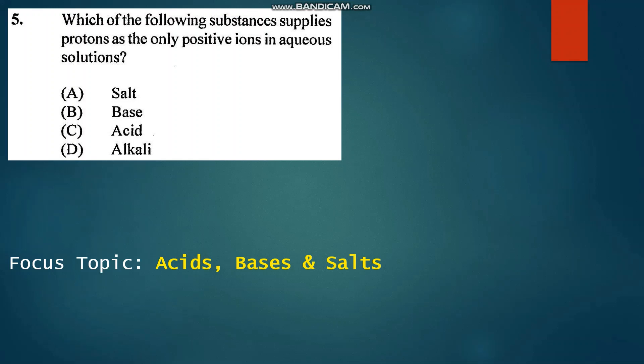Number five: Which of the following substances supplies protons as the only positive ions in aqueous solutions? According to the Bronsted-Lowry definition of an acid, an acid is a proton donor, and so our answer would be acid. So that's C.